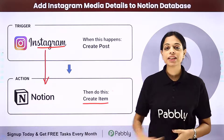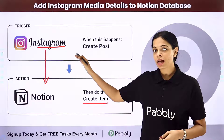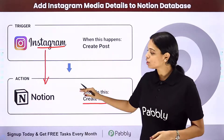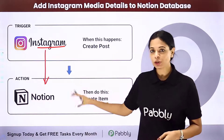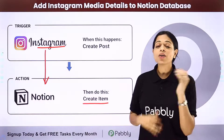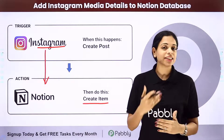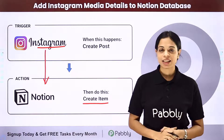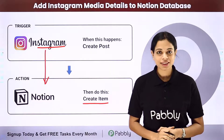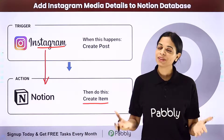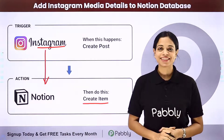Your trigger application would be Instagram and your action application would be Notion. How can you integrate and automate this entire process? To understand that, let me take you to my screen.